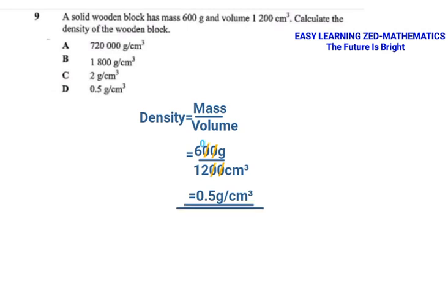The correct answer is 0.5 grams per centimeter cubic. That was the correct answer among the options given. This was the first question, from the 2019 Question Paper 1. Now let's go to the next question from 2019 Paper 2.